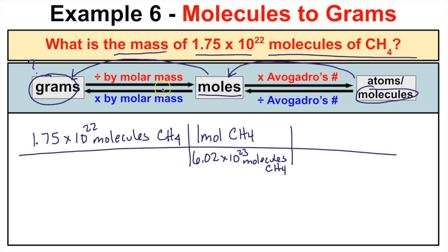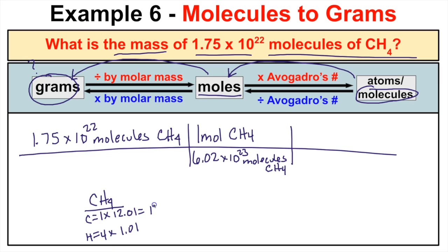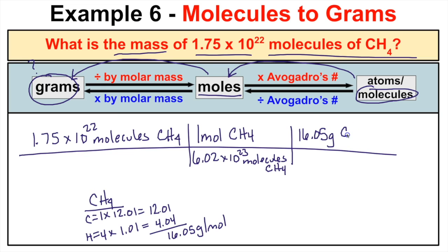Then we multiply by the molar mass of CH₄. Breaking CH₄ down: one carbon atom and four hydrogen atoms. From the periodic table, carbon is 12.01 and hydrogen is 1.01. So we get 12.01 for carbon and 4.04 for four hydrogens, which adds up to 16.05 grams per mole — that's the molar mass of CH₄. We multiply by 16.05 grams of CH₄ per mole of CH₄.